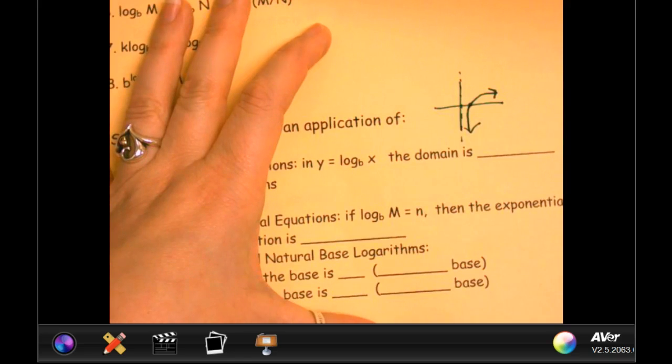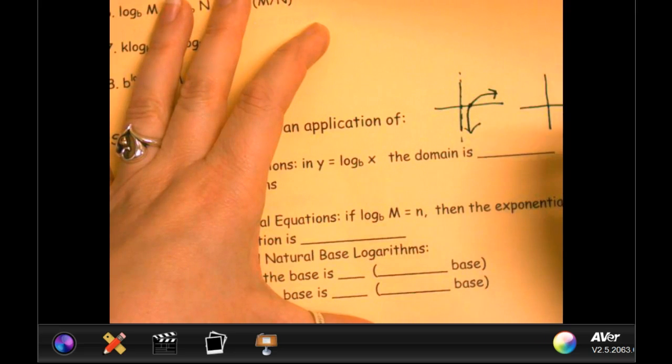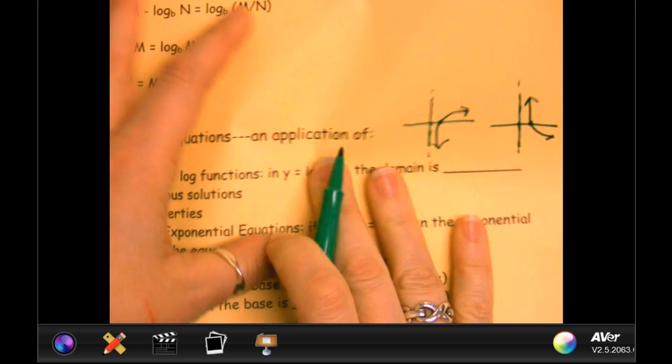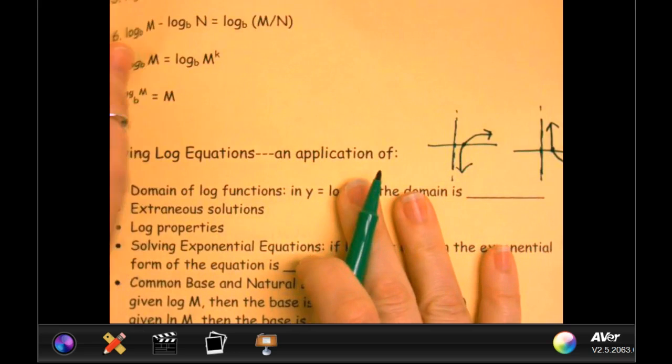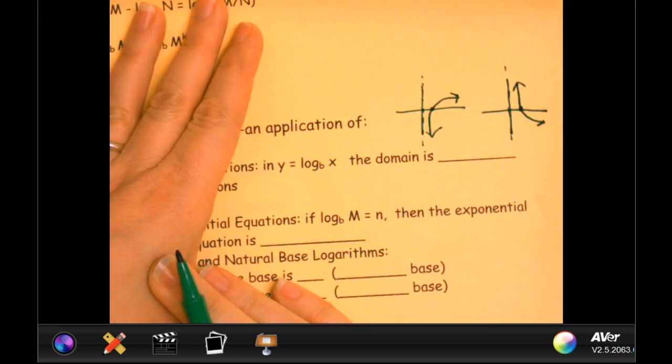If b is less than 1, then it's a reflection in the x-axis, and it comes down like this. So maybe we'll do a second one, just make sure that we understand. But either way, is my domain the same? Yes, my asymptote is the same and my domain is the same.